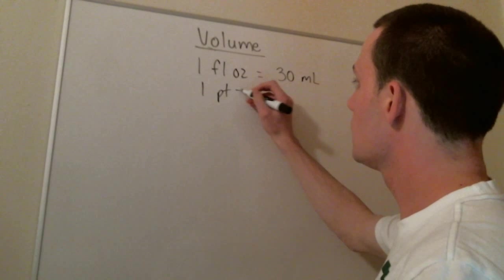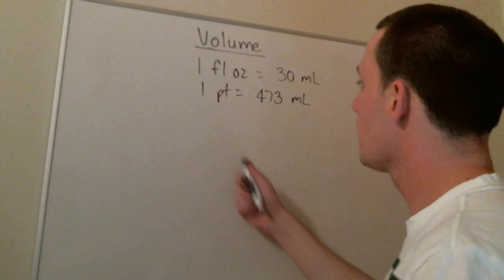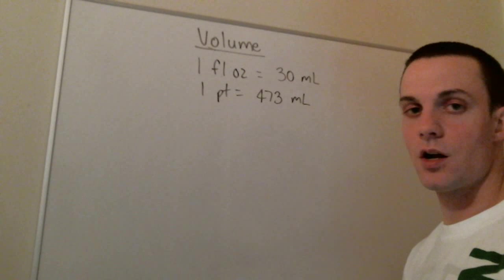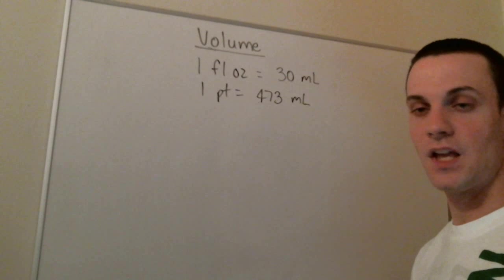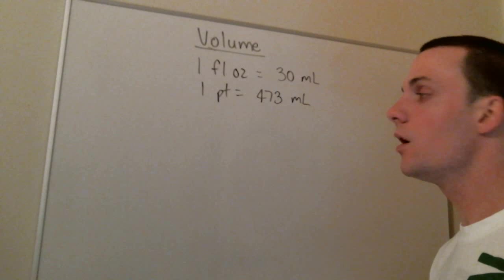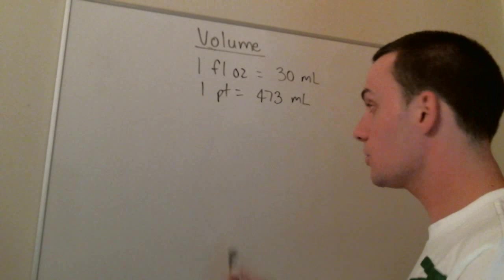One pint is 473 milliliters. In the community setting, we typically see stock bottles that come in pint sizes. So stock bottles of different solutions or elixirs might come in pint size. And they're used for dispensing to patients.